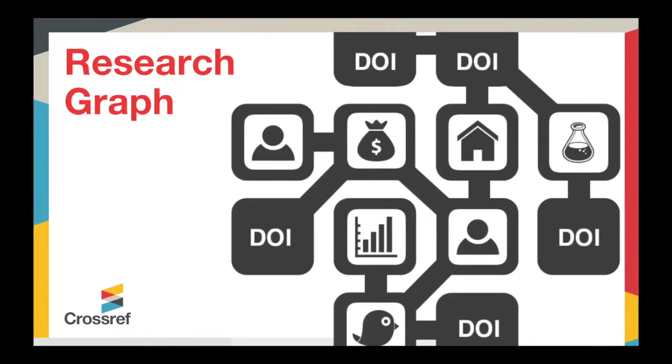In 1999, when Crossref was formed, it was all about solving the problem of reference linking—being able to click on a link in a bibliography and go to the article on some other platform. That's what we've been doing for a long time. It's what we continue to do—still one of our primary missions—but it's gotten bigger and expanded quite a bit. I'm going to focus on that fact.